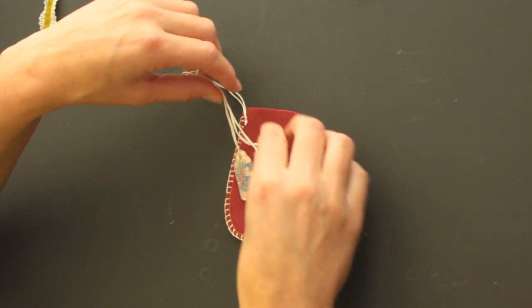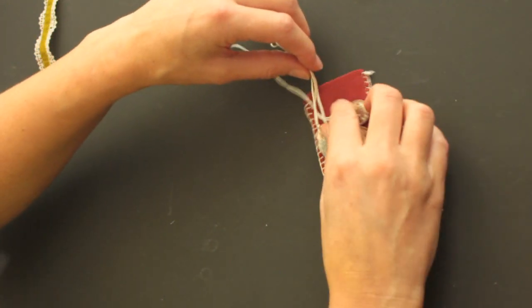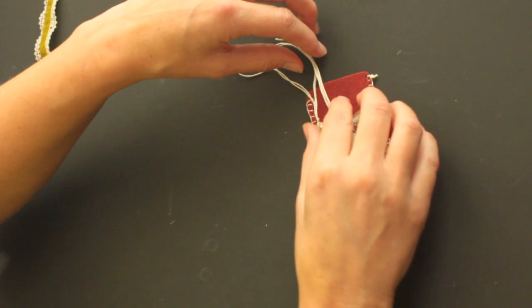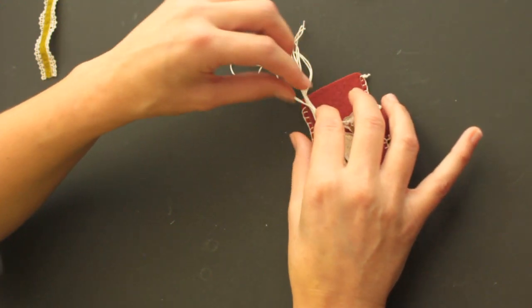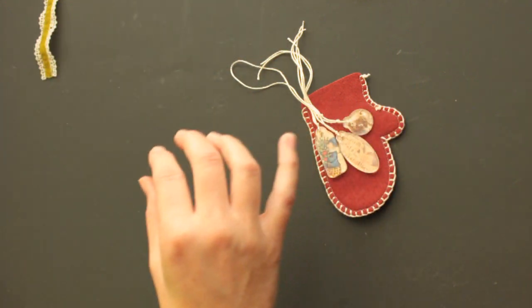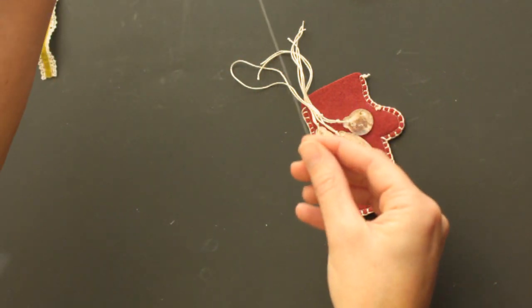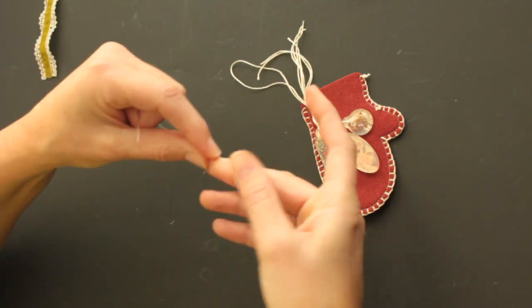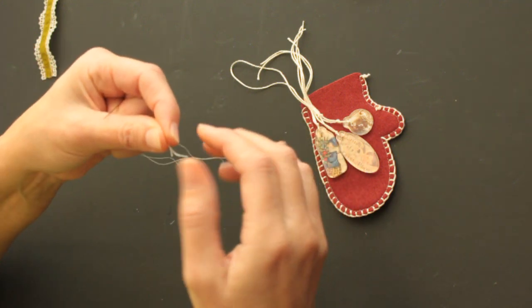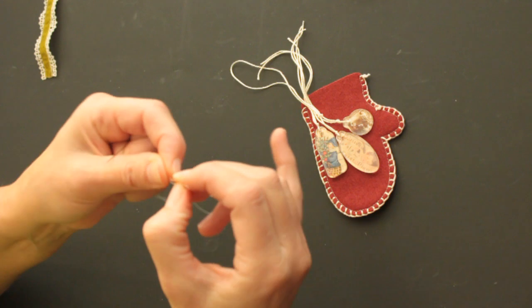Now place them on your mitten. And then you sew these three, four pieces on. I just use regular sewing thread. Make a knot and sew this on.